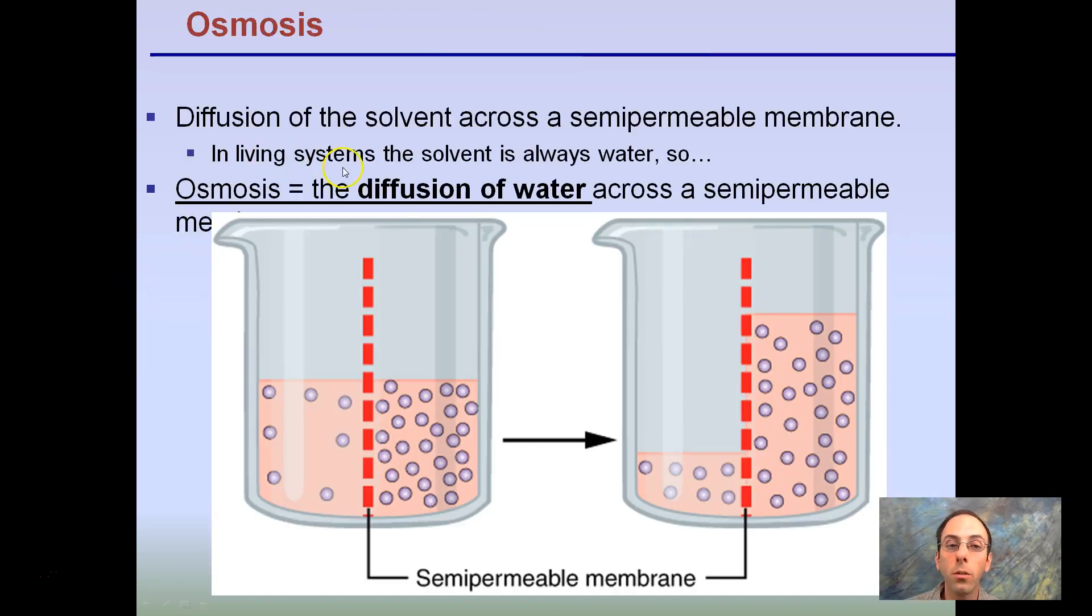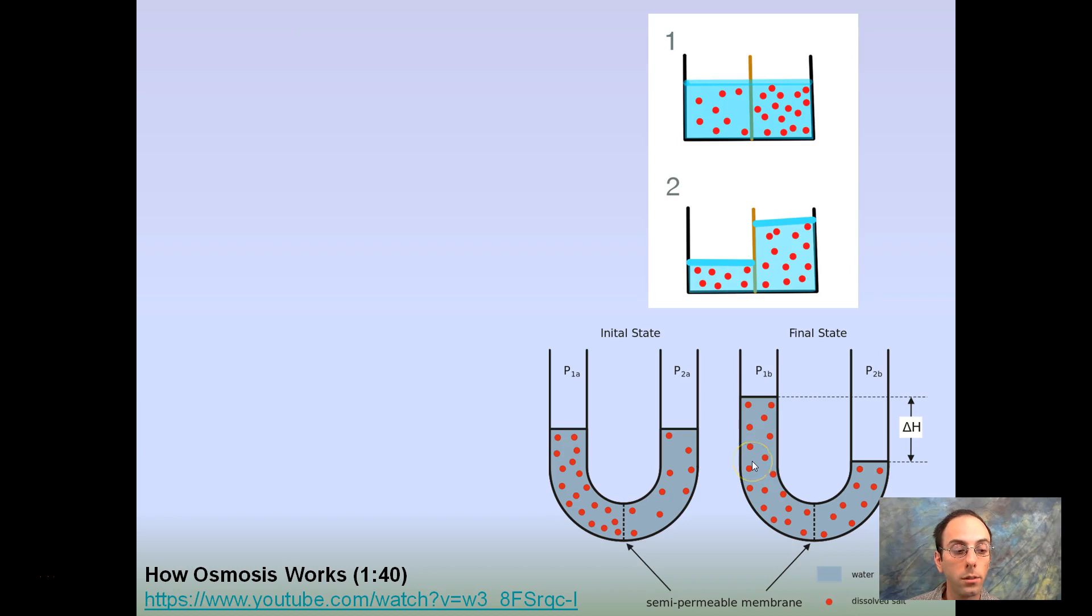Osmosis is a little different. Diffusion of solvent across the semipermeable membrane. In living systems, the solvent is always water. So, osmosis is basically diffusion of water across the semipermeable membrane. Here, we have the amount of molecules on the left and right staying the same, but we have the amount of water shifting. The water is trying to make the concentration of each equal, even though they can't pass through this particular semipermeable membrane.